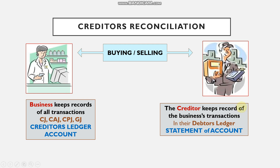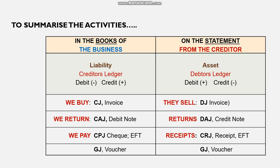The creditor is also keeping records of their engagement with us. From their point of view, they are selling goods to us, so we are a debtor to them. They operate a debtors ledger account in the name of our business. At the end of every month, they send us a statement of account — a reflection of our account in their debtors ledger, essentially a copy of how our account looks in their books.